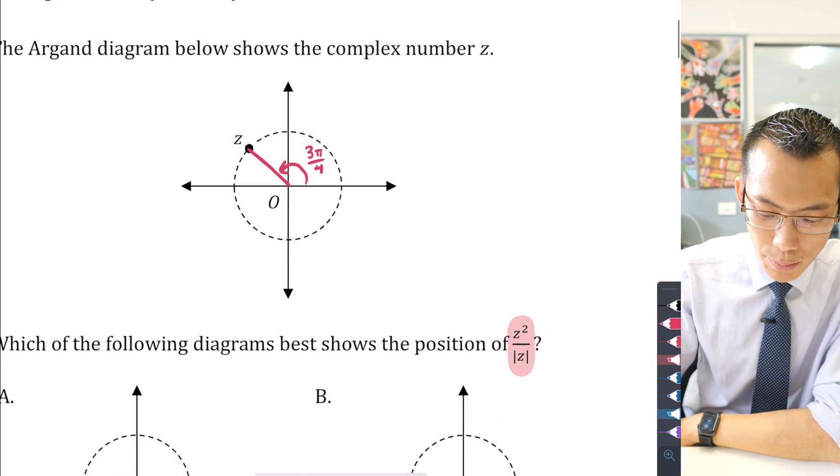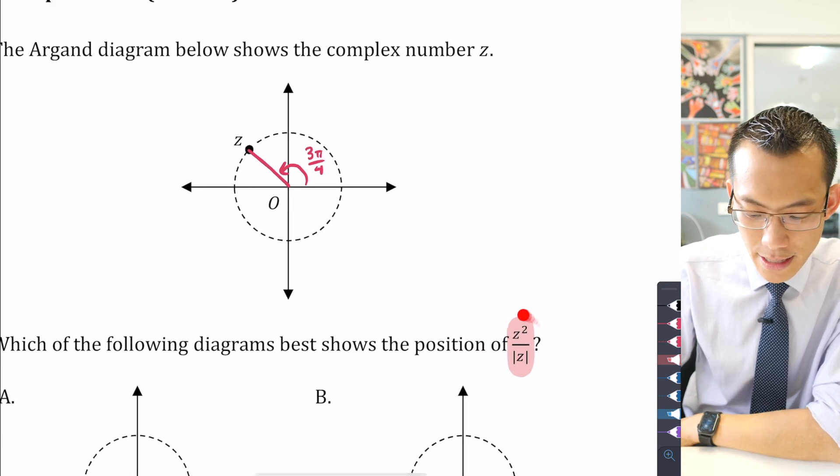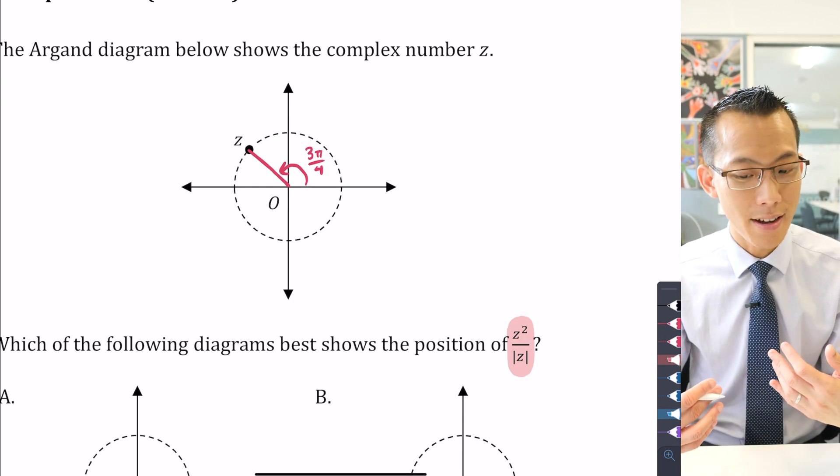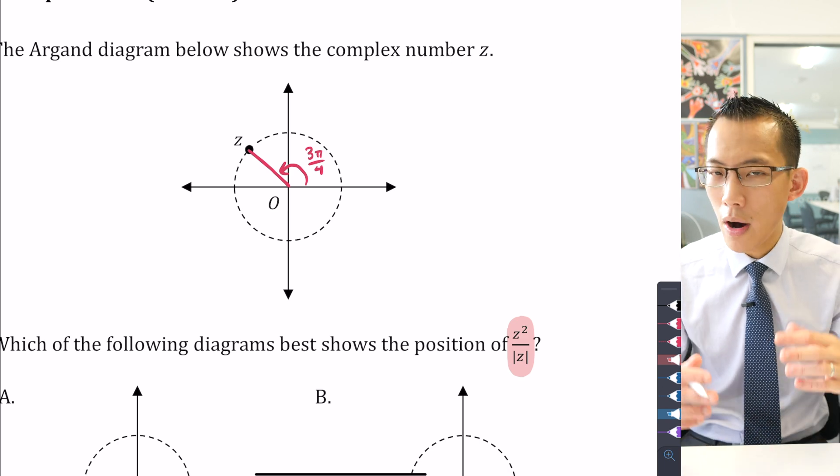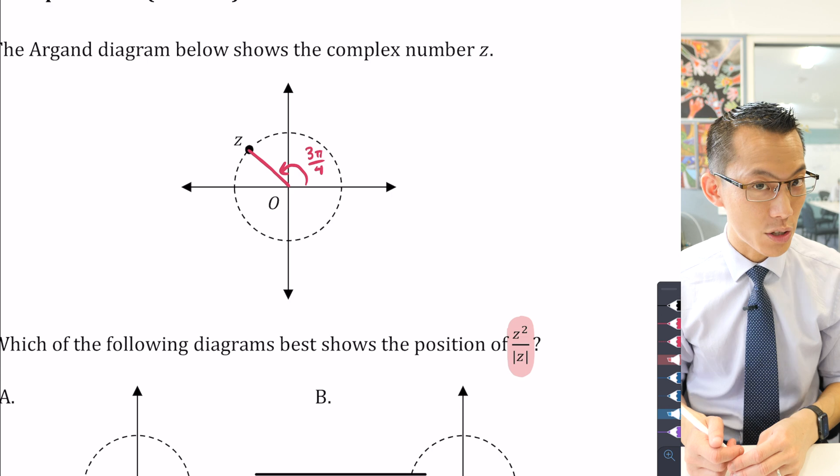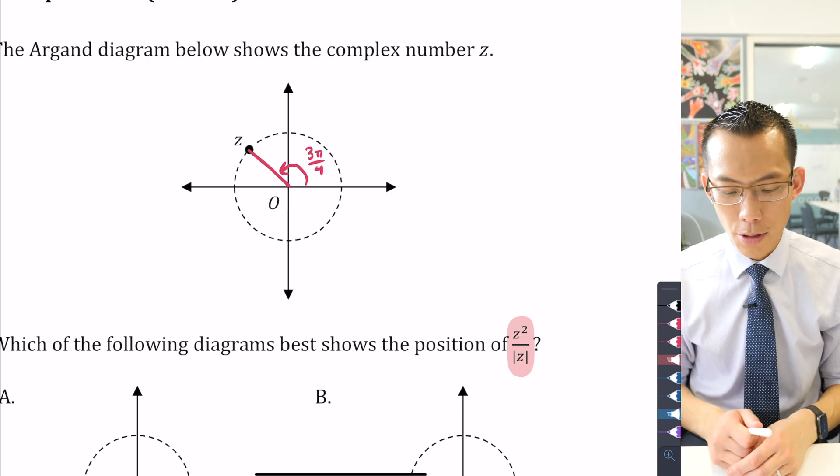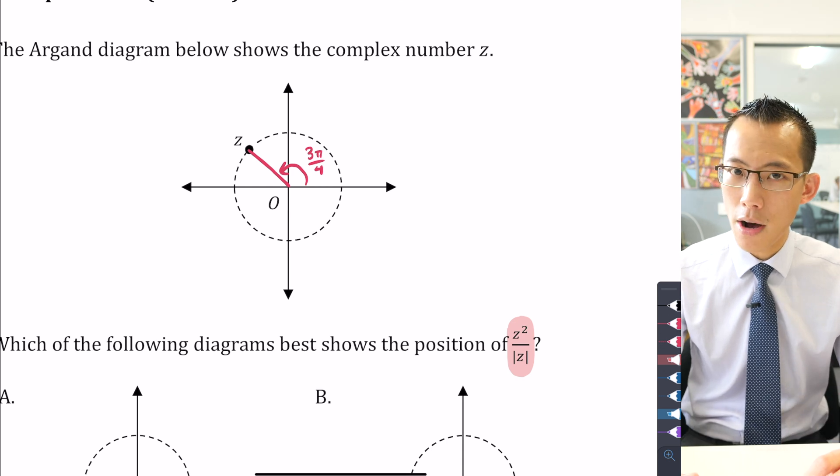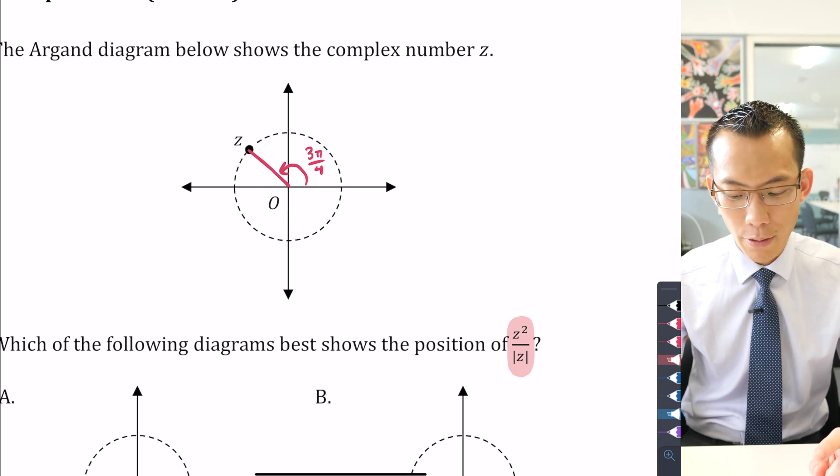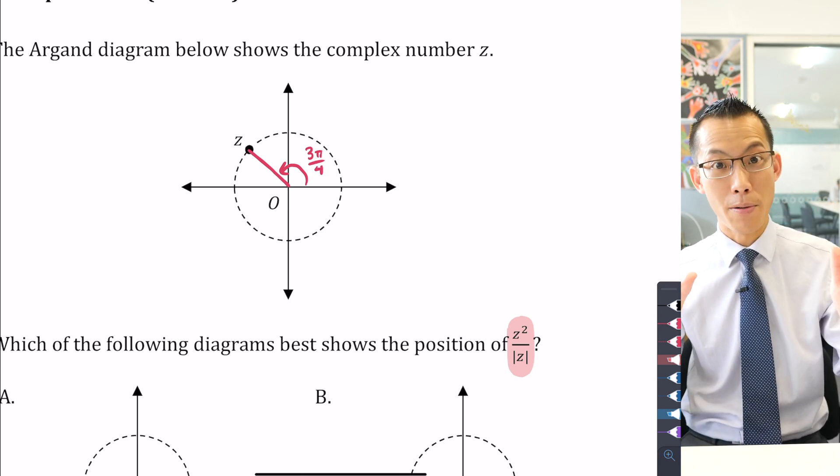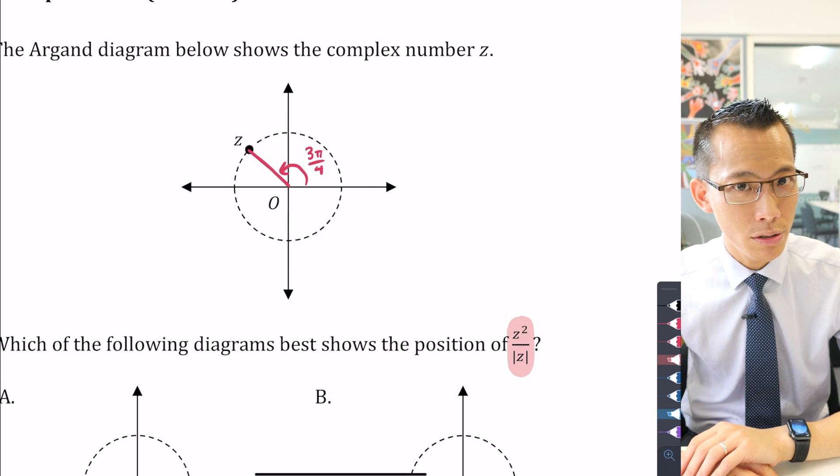Now when you multiply a complex number by itself, you're adding arguments and multiplying moduli. What happens is you're going to get further or closer away depending on what the radius of that circle is, but more importantly for our purposes, you're going to rotate. Because you've got an argument here of 3π/4, we know we're going to add those arguments together, so you get 3π/4 plus 3π/4, which is going to be 3π/2.